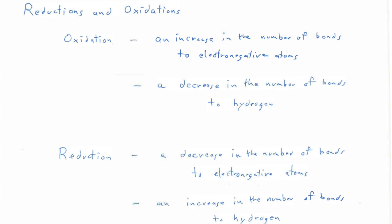Reduction is just the opposite. When you look at a carbon species, reduction occurs when there's a decrease in the number of bonds to an electronegative atom. And typically that results in an increase in the number of bonds to not-so-electronegative atoms — typically hydrogen, occasionally carbon.